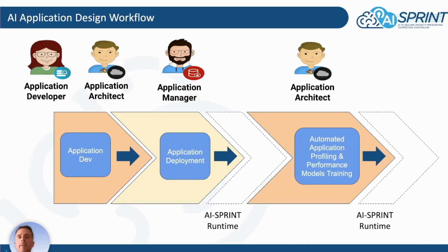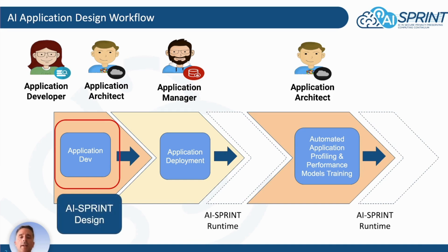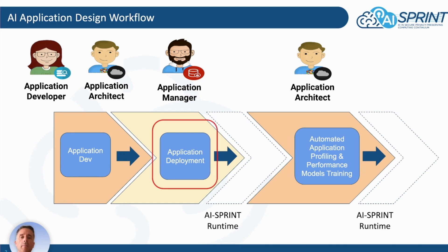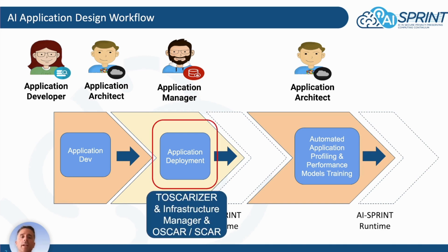The AI application design workflow of an AI Sprint application starts with the application development using the AI Sprint design tool. Then we have the application deployment using the Toscarizer and Infrastructure Manager tools. Toscarizer creates the Tosca templates that are used by the Infrastructure Manager to provision the virtual machines and configure them in order to deploy the AI inference pipelines using OSCAR services.